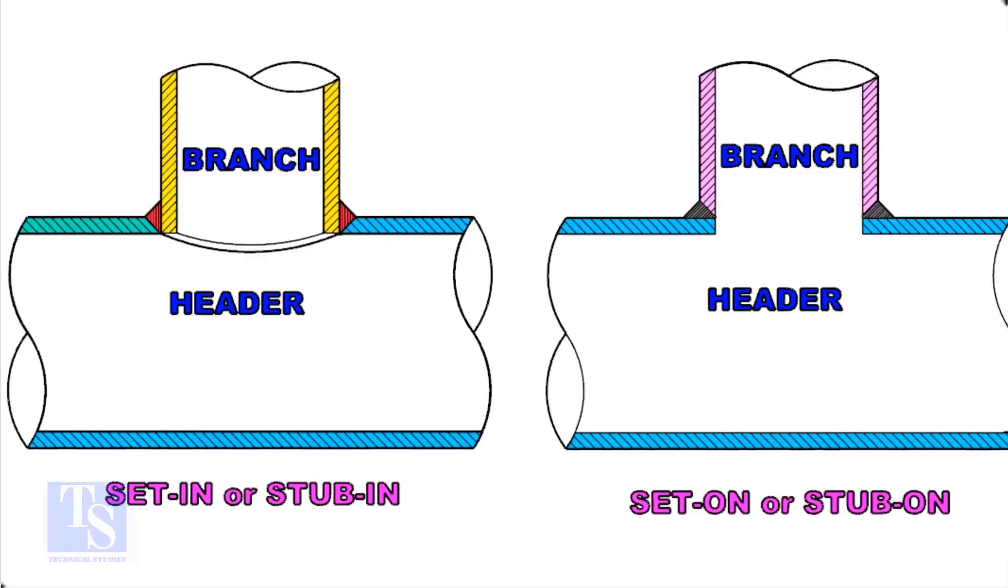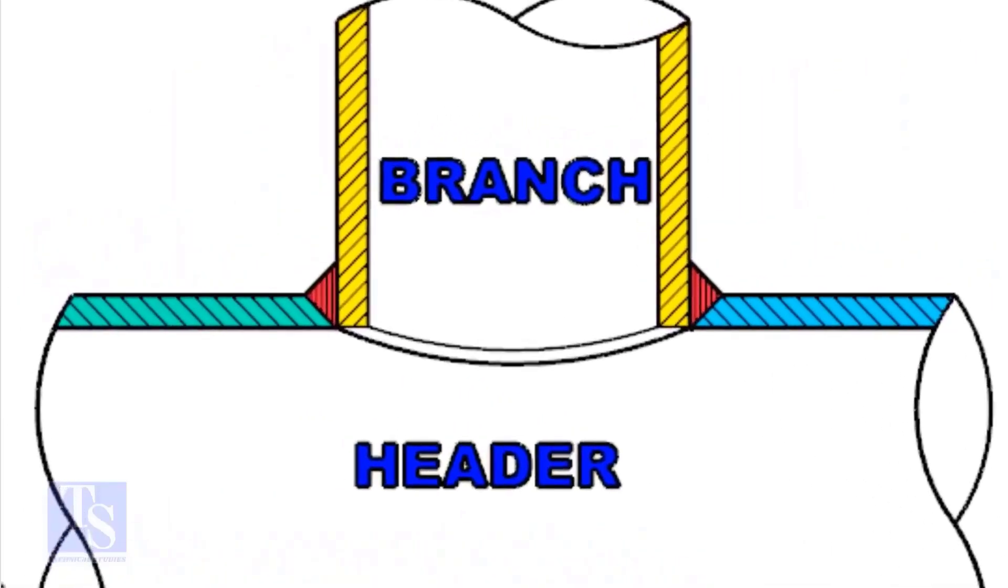Let us first look at the stub in joint. In a stub in connection, the bevel is prepared on the header pipe and the branch pipe sits inside the header.